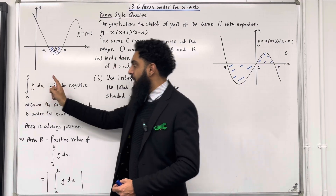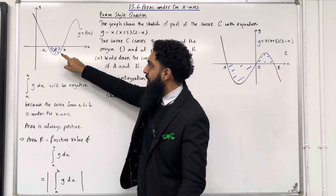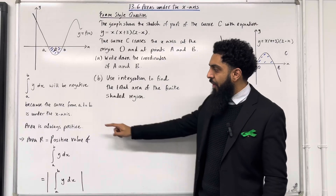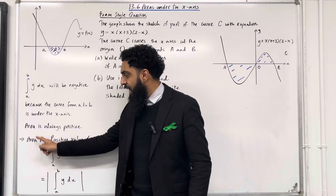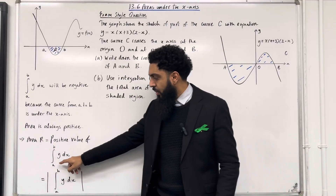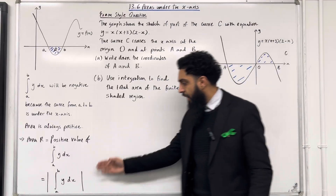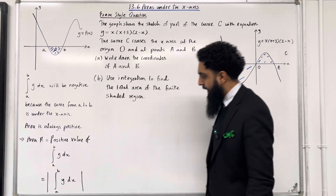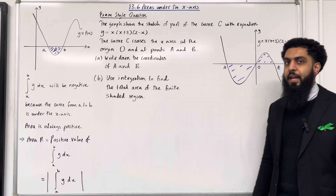This particular integral will be negative, because from a to b the curve y equals f of x is below the x-axis. By definition, we know that area R is always positive. This implies that to calculate the area R, we have to take the positive value of the integral from a to b of y dx. In other words, we take the absolute value of the integral from a to b of y dx. These are the key facts of 13.6 areas under the x-axis.